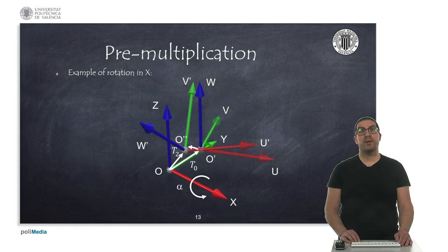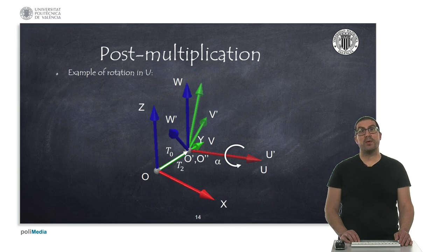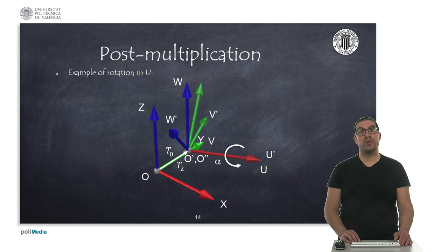Similarly, if we apply a rotation around X with respect to the fixed frame, we observe that the mobile frame moves and also rotates, because the origins O and O' are not coincident, and the new origin will be located at O''. If, on the contrary, we perform a rotation with respect to the mobile reference frame, the new origin will not be modified. The orientation is different from the previous case, because the X-axis of the fixed frame and the U-axis of the mobile frame are not pointing in the same direction.